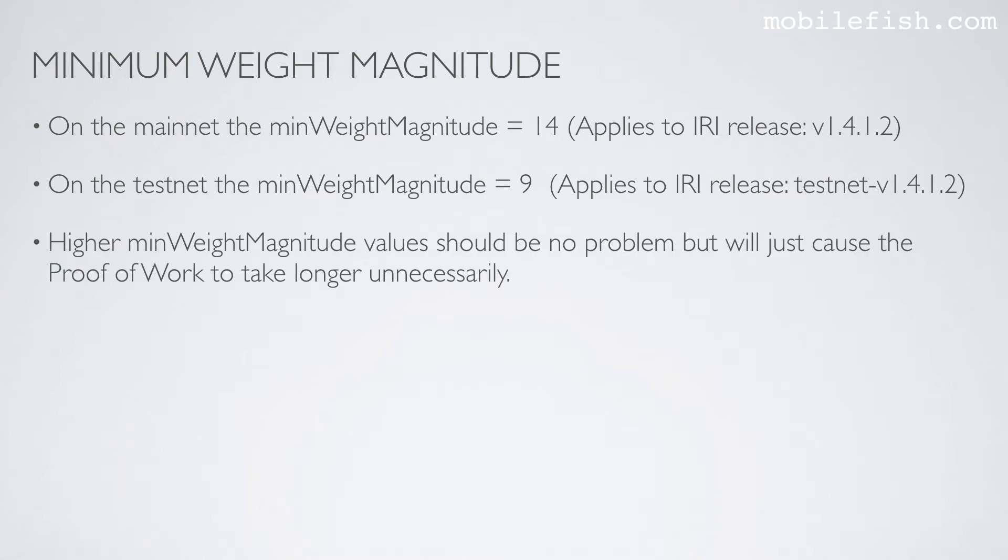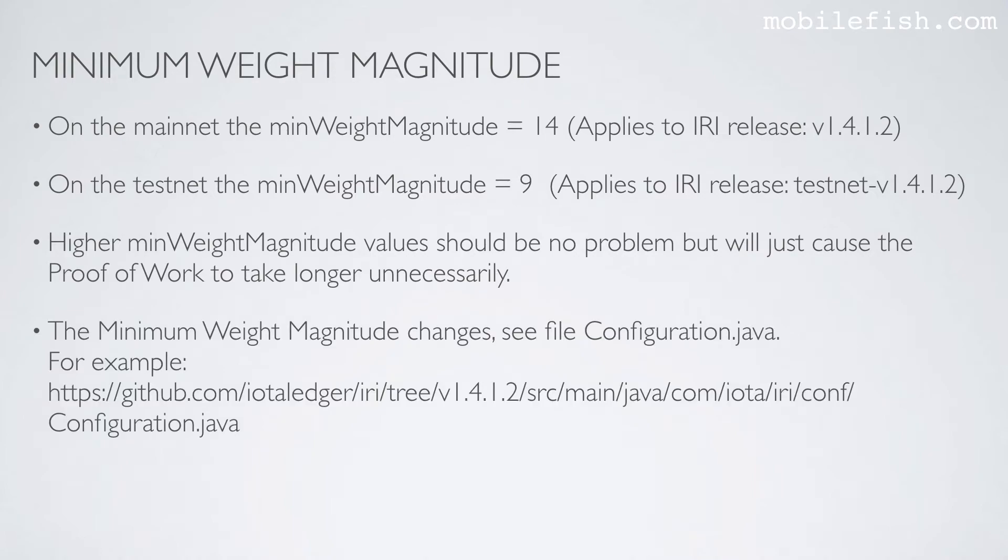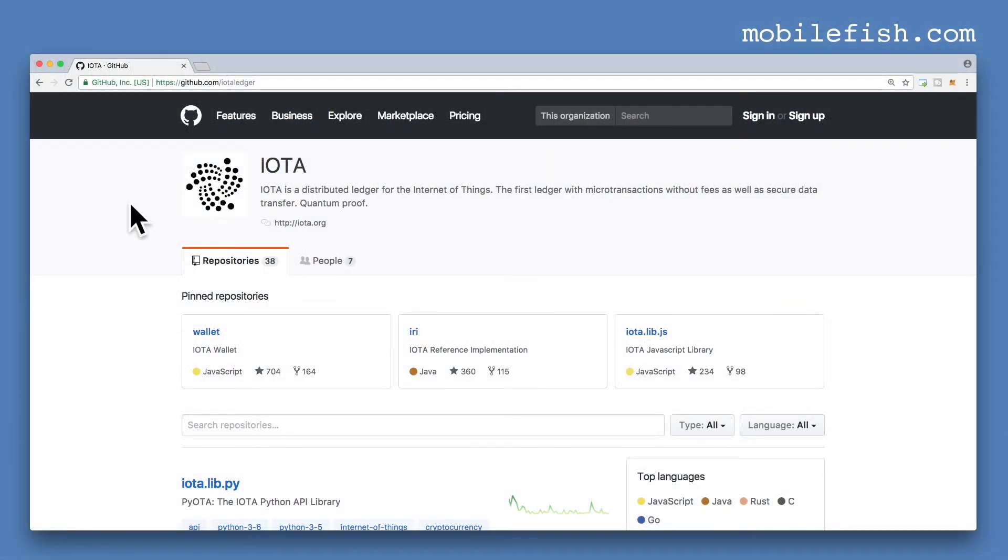Higher minimum weight magnitude value should be no problem but will just cause the proof-of-work to take longer unnecessarily. The minimum weight magnitude changes, see file configuration.java.